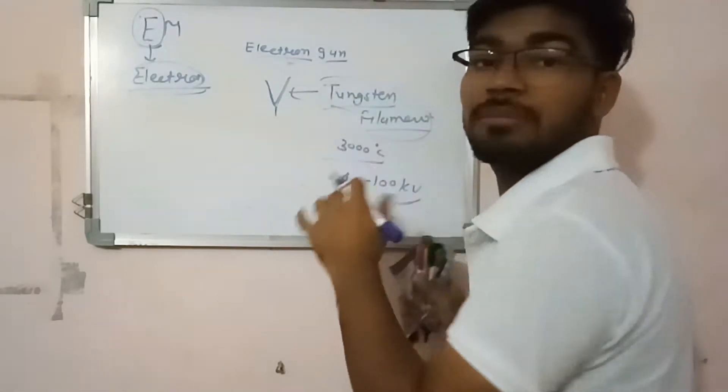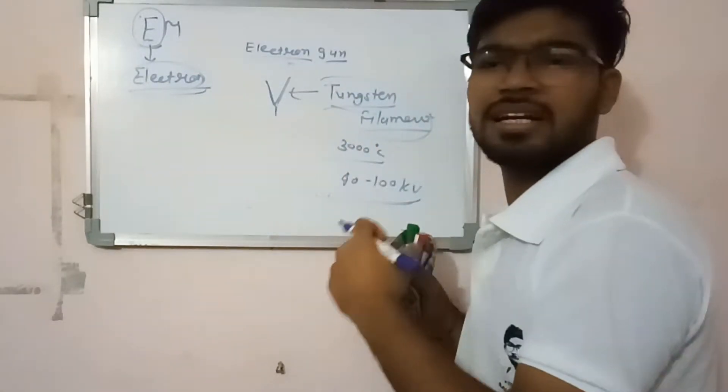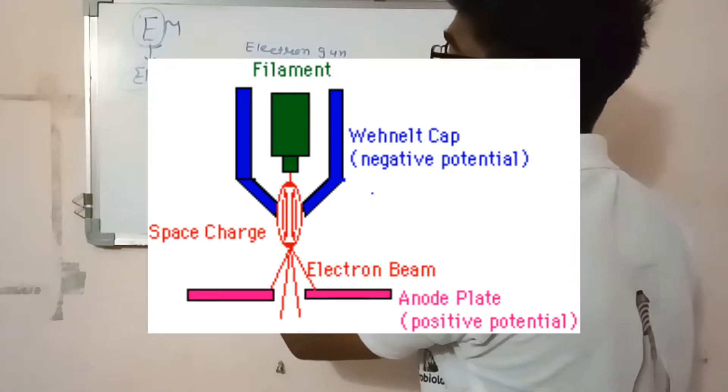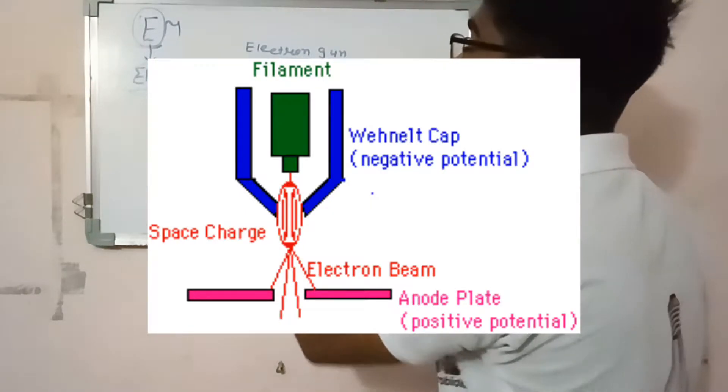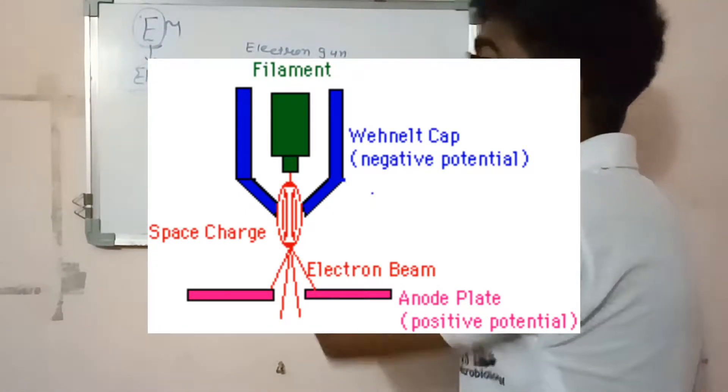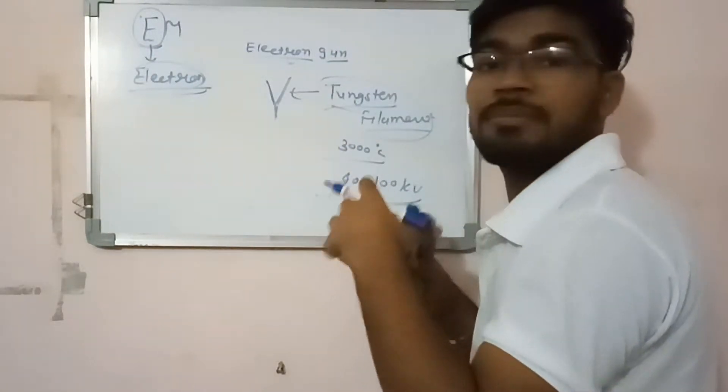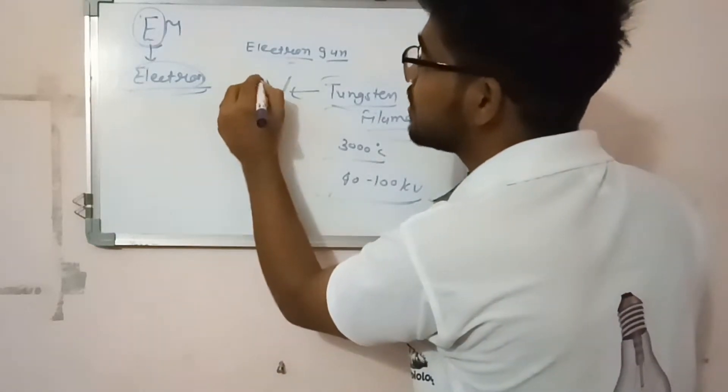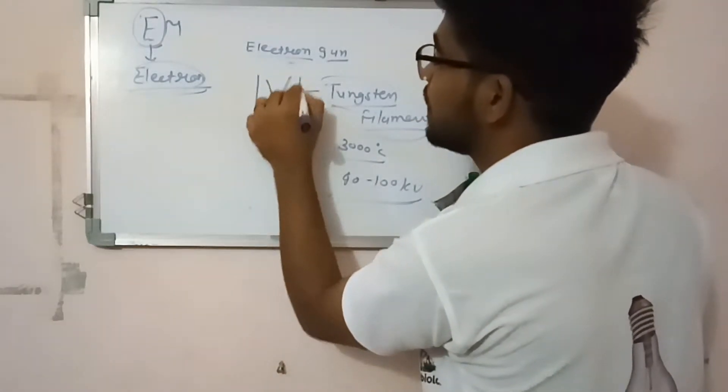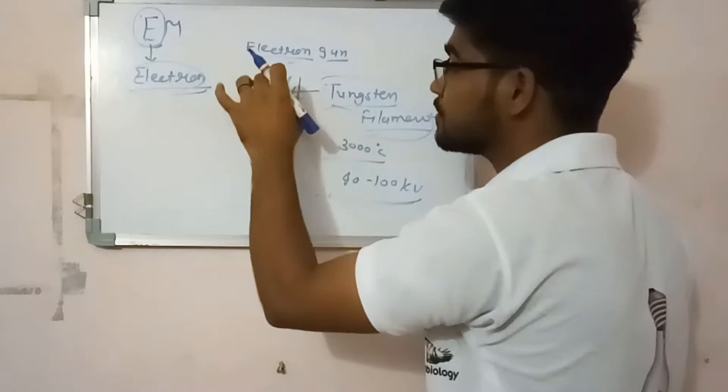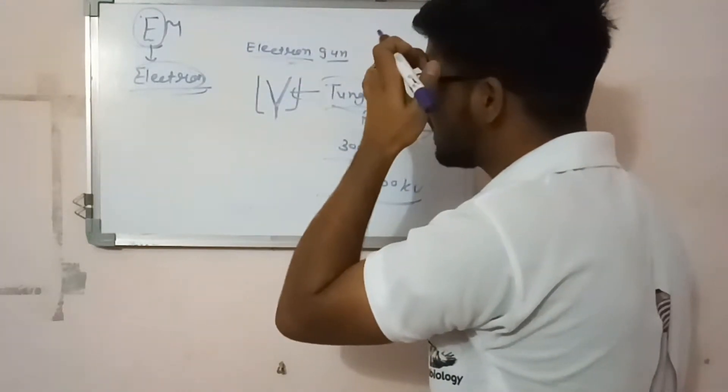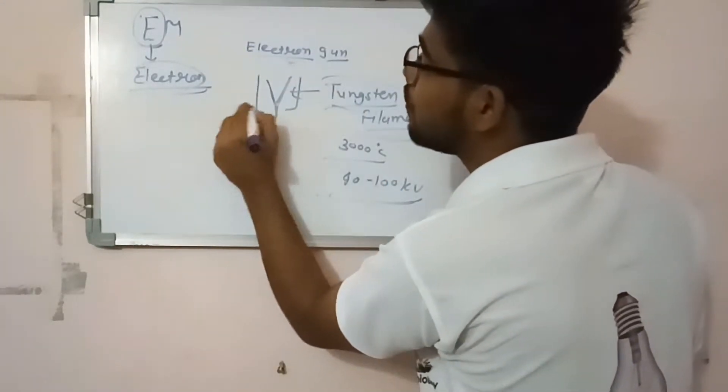The tungsten filament becomes excited and provides an electron beam. The heat is very high, so to reduce the heat and not damage our system, we place one cap near the V-shaped filament. This cap is called Wehnelt cap.